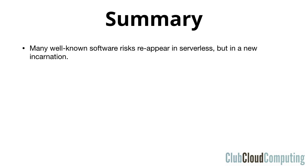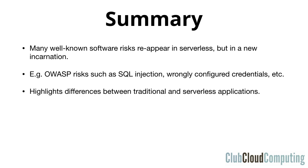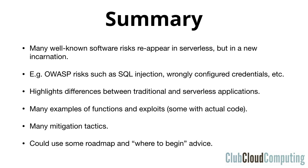The summary of what it's all about is that many well-known risks associated with application software reappear in serverless but in a new incarnation — they look different and play out in a different way. An example is OS risks such as SQL injection. The report highlights the differences between these two styles of application architecture, gives a lot of examples of function architectures and exploits, and includes actual code. Overall I like the document very much, although I think it could use a roadmap and a 'where to begin' guide. So let's dive into a subset of these 12 risks.